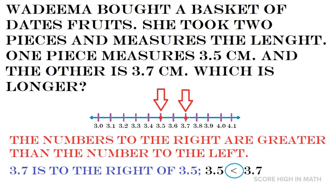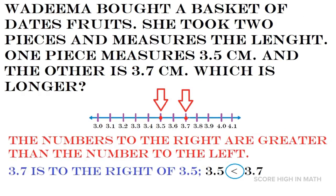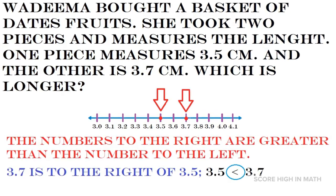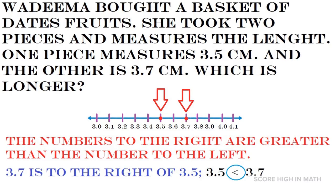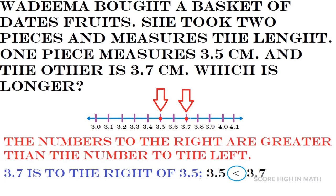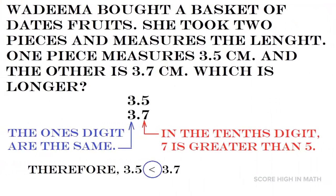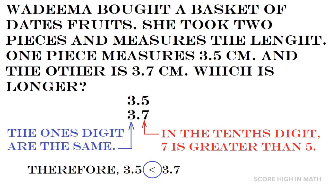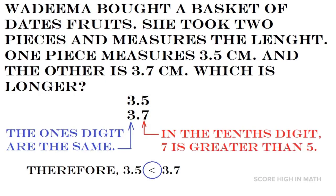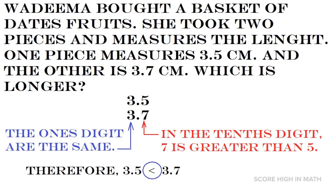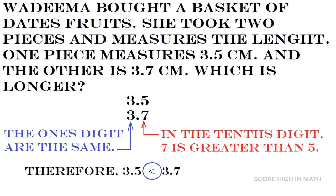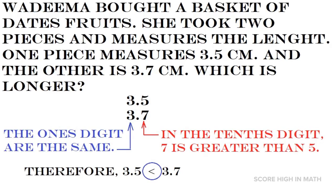To wrap it up, in comparing decimals you can use the number line strategy — just plot the given values on the number line and you can right away identify which number is greater. Always remember that the number on the right is always greater than the number on the left. You can also use the strategy of aligning the numbers on their proper place value, then identify which one is greater.